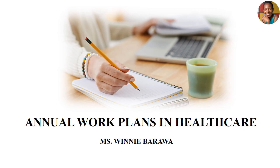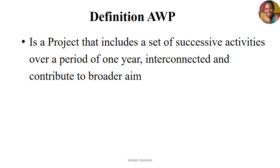By definition, an annual work plan is a project that includes a set of successive, interconnected activities over a period of one year, which contribute to the broader aim of an organization. To remind us, we did a lesson on types of healthcare plans where we discussed long-term, medium-term, and short-term plans. An annual work plan is actually part of the short-term plan.